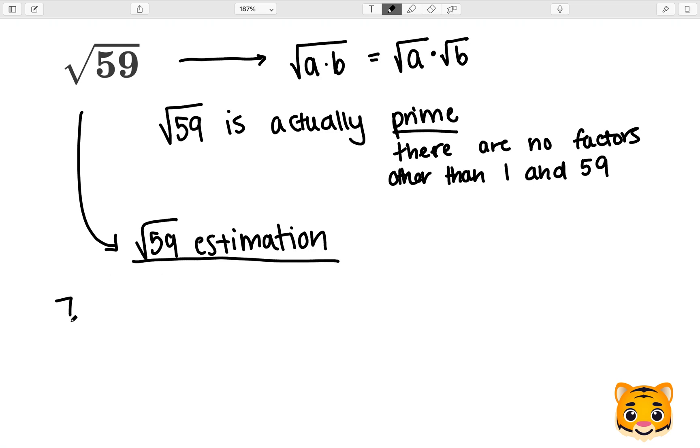We can see that 7 squared is 49, that's pretty close to the square root of 59, and 8 squared is 64, also close to 59. Now we can see that the square root of 59 must be between the square root of 49 and the square root of 64. The square root of 49 is 7 and the square root of 64 is 8, meaning the square root of 59 is between 7 and 8.